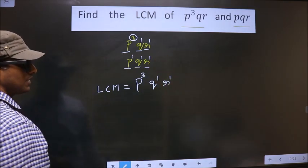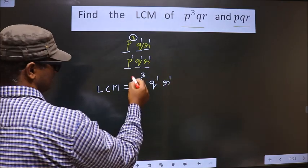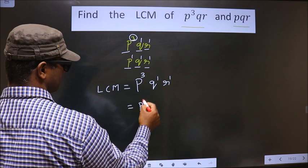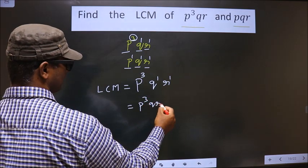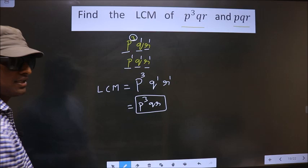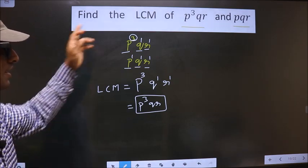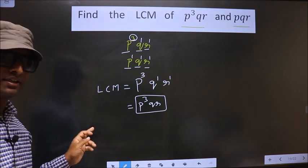No more letters are left out in any of the numbers. So our LCM is p³qr. Am I clear?